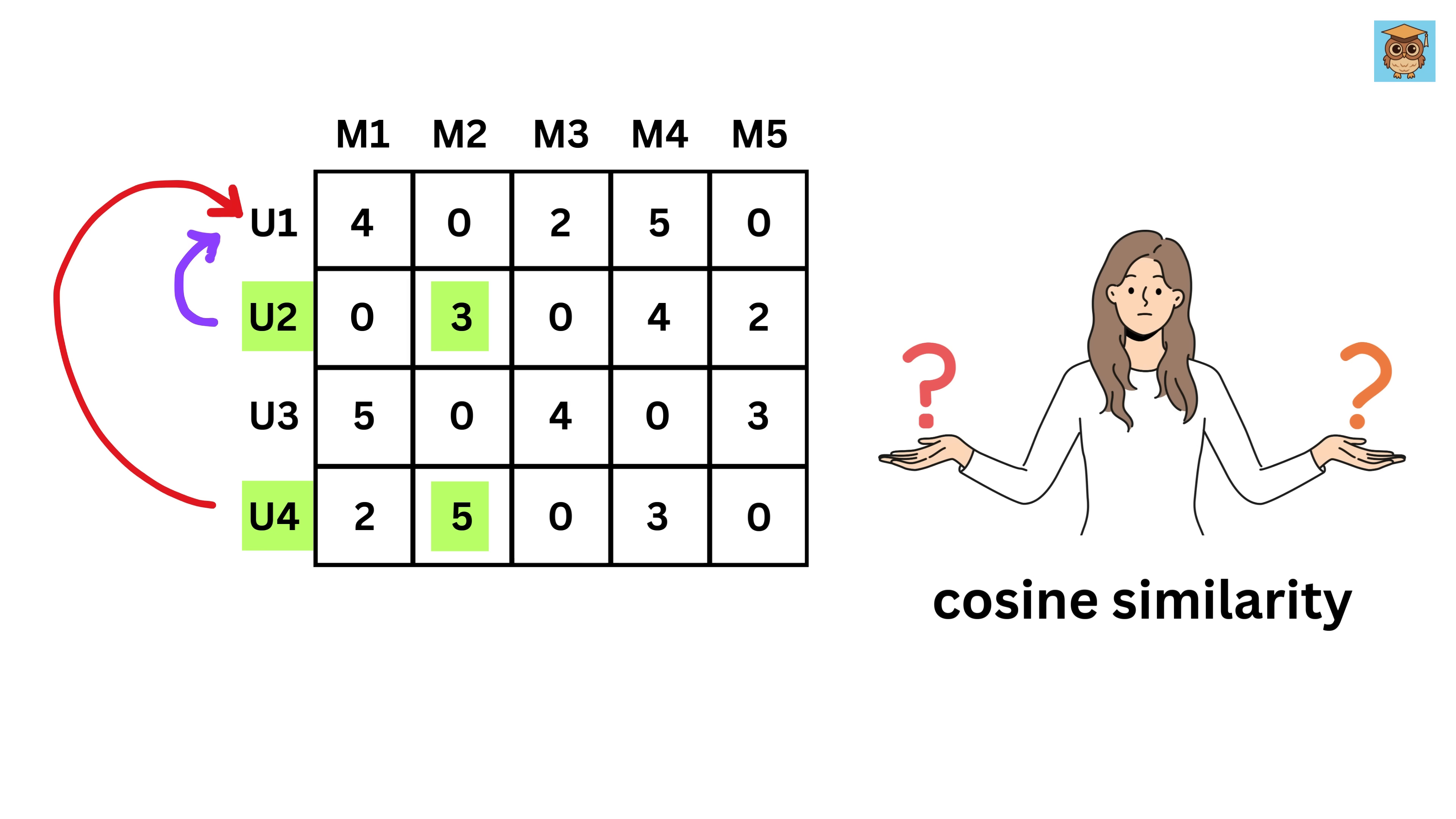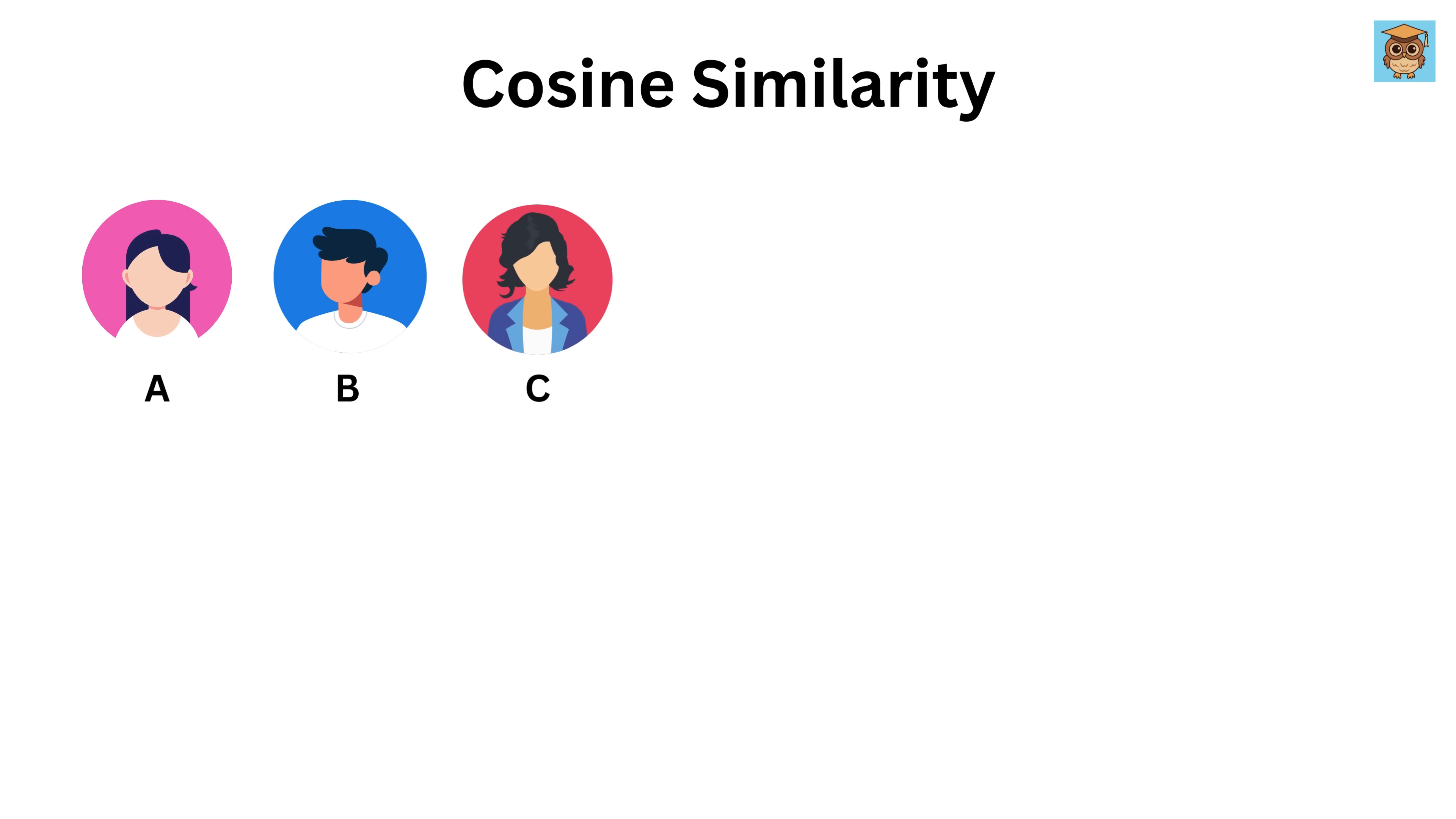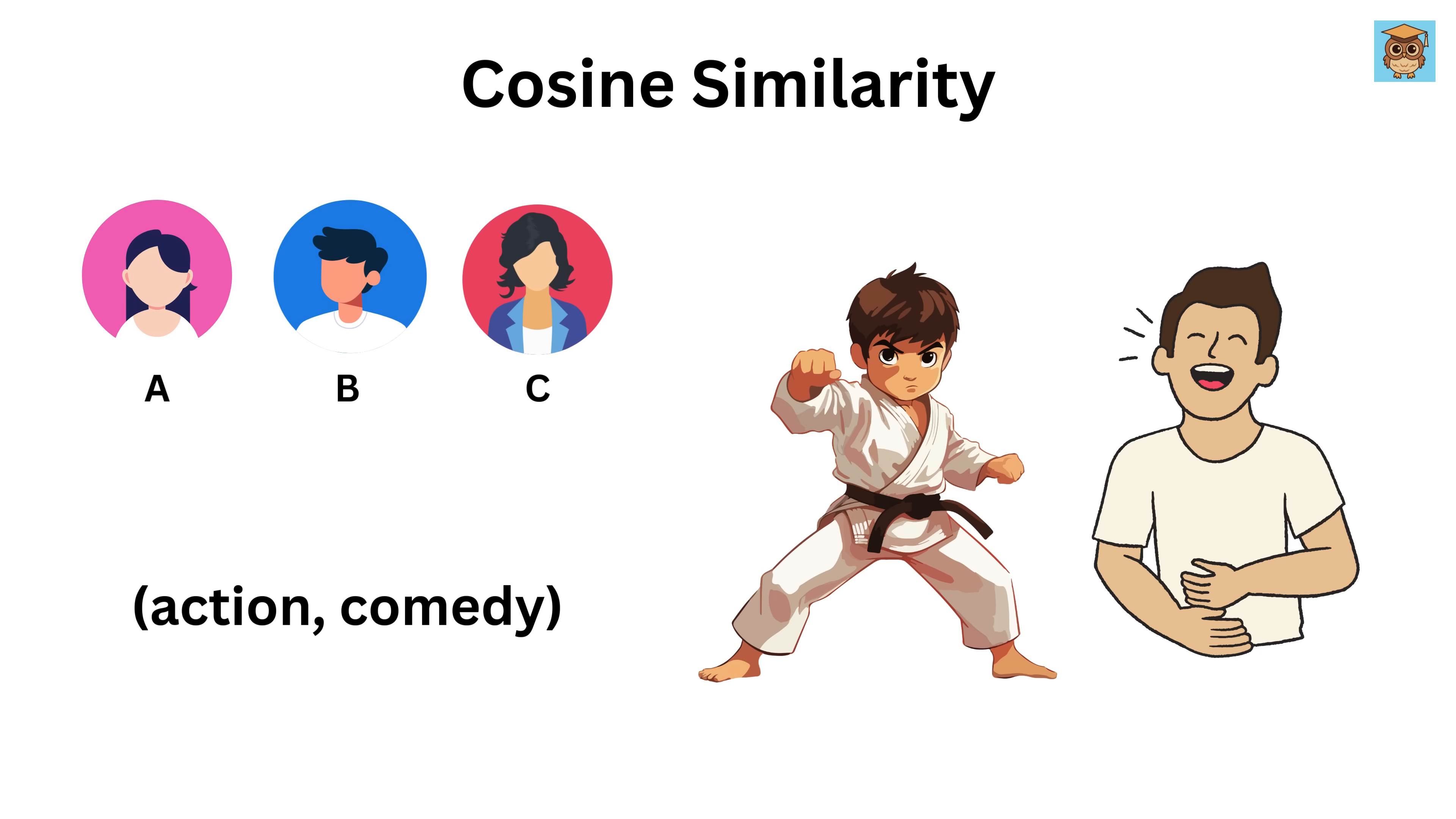We compare their ratings using a math trick called cosine similarity. Don't worry about the name, I'll show you what it means with numbers. Let me show you cosine similarity in easy terms, and then we will apply it in our example. Imagine three people and their taste in movies. Let us say we have two genres, action and comedy. We represent their ratings as a 2D vector, action, comedy.